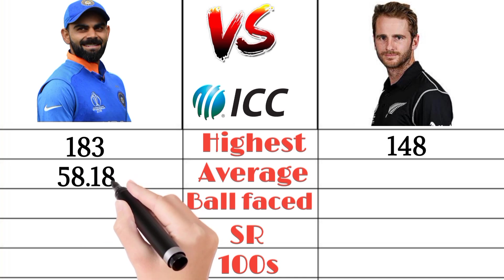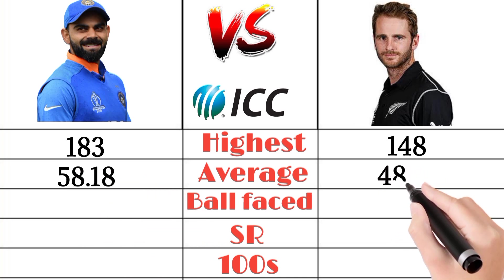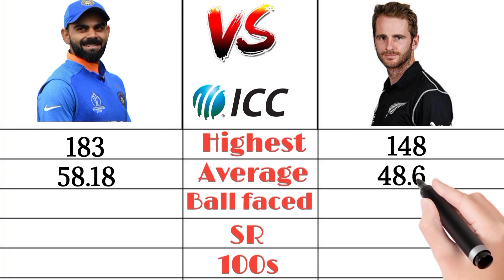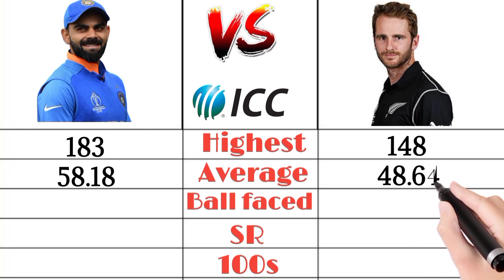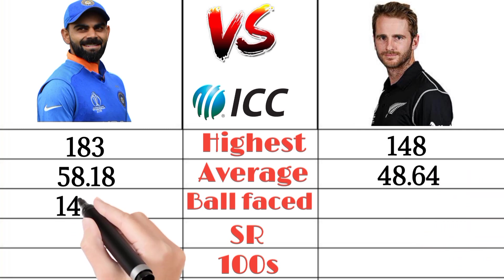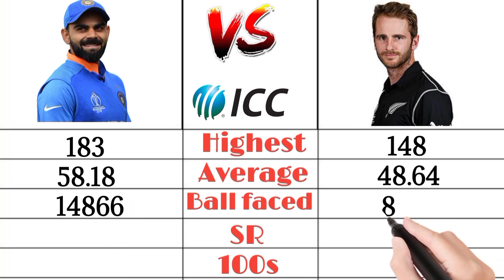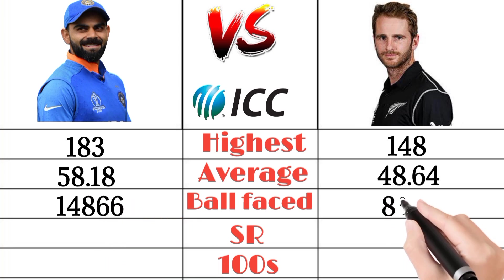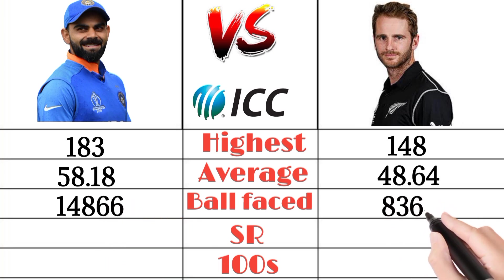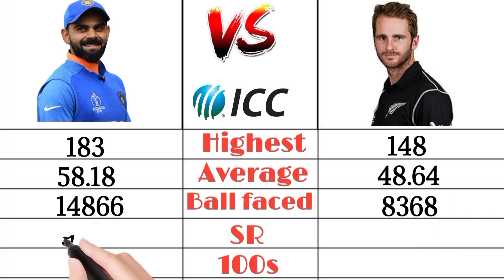Virat Kohli's ODI average is 58.81 and Kane Williamson's ODI average is 48.64. Virat Kohli faced 14,866 balls in ODIs and Kane Williamson faced 8,368 balls in ODIs.